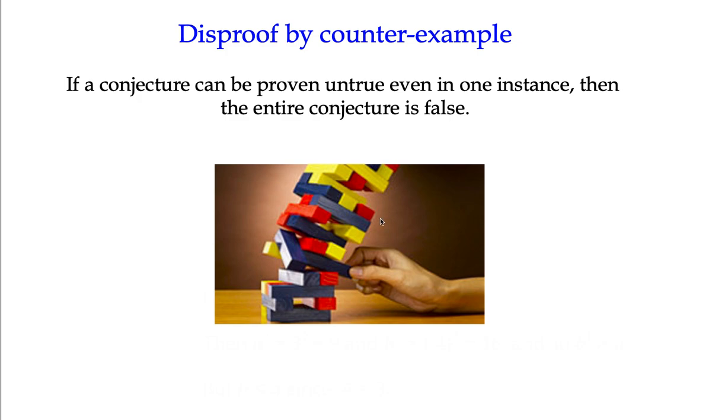Hi, we're walking through the proof topic just now. We've just had an introduction to proof and we're going to launch into examples of different ways you can prove things to be true. This first part is actually the way in which you prove something is not true - disproof by counter-example.